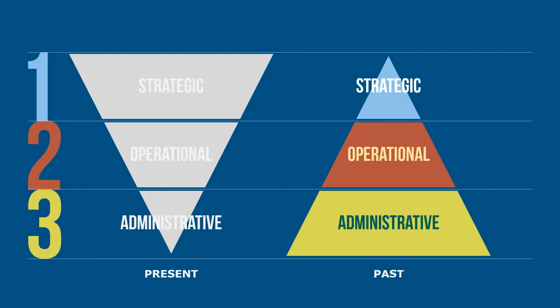Human resource management has played an important role in the life of organizations throughout modern history. In the past role of human resource management, the personnel function was highly administrative and clerical in nature, as seen on the right-hand side of the model labeled the past role. The past role focused on transactional activities related to processing people-related activities, such as payroll. A heavy emphasis on compliance led to the personnel function policing policy and procedure, which left little time for the important strategic role.